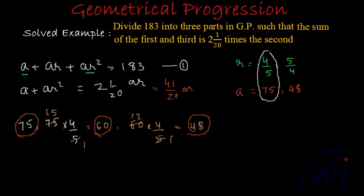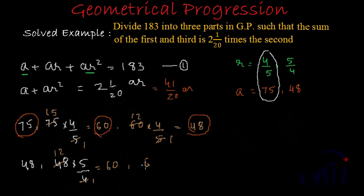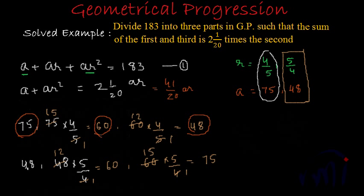For the second case, where a = 48 and r = 5/4: the first term is 48, the second term is 48 × (5/4) = 60, and the third term is 60 × (5/4) = 75. So again we get the same set — 48, 60, and 75 — just in the reverse order. Therefore, the three parts in geometrical progression are 48, 60, and 75.